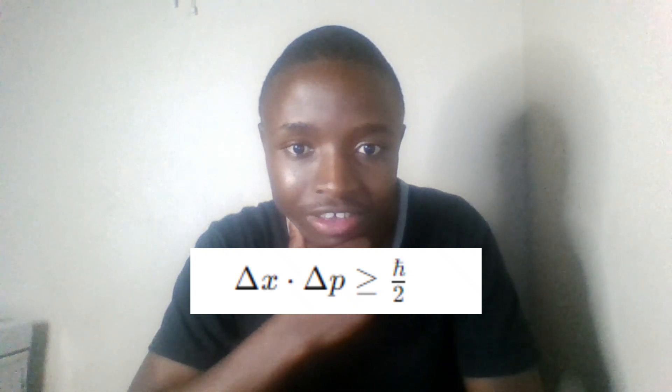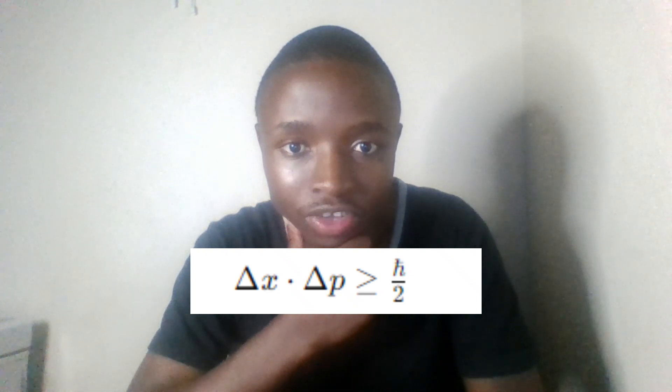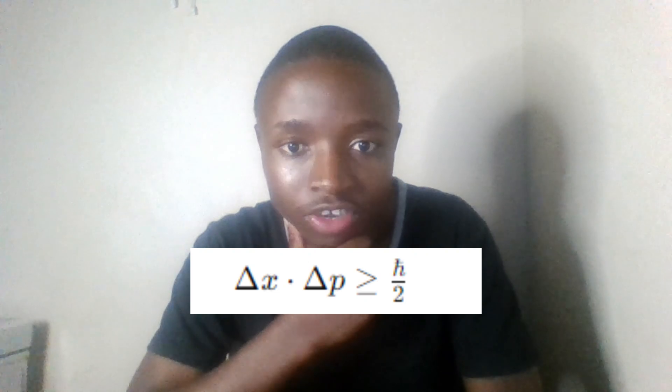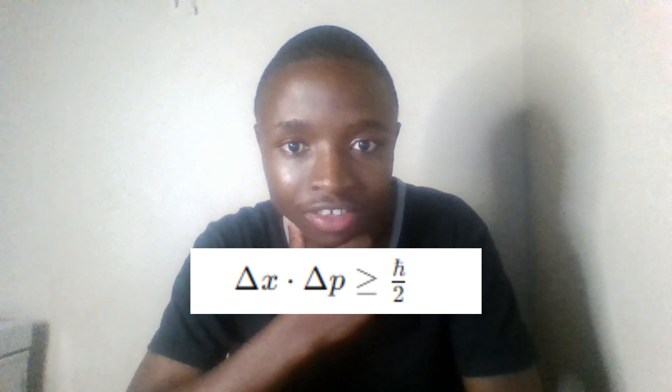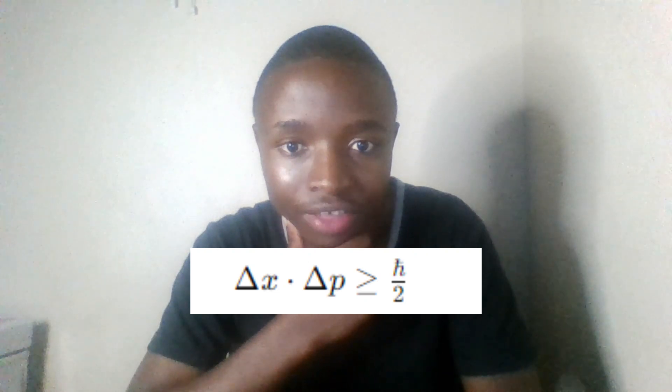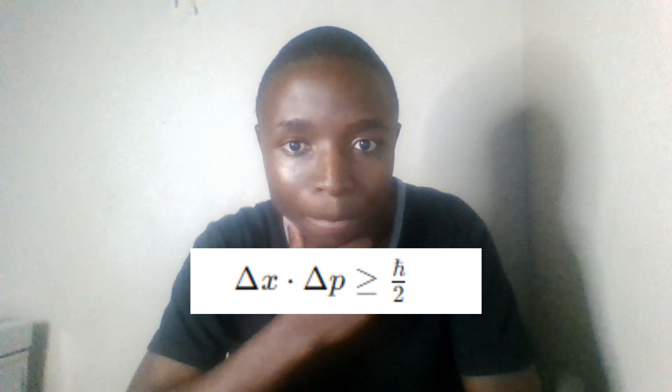Delta-x is the uncertainty in position. Delta-P is the uncertainty in momentum. H-bar is the reduced Planck constant.